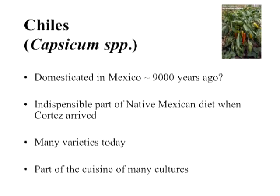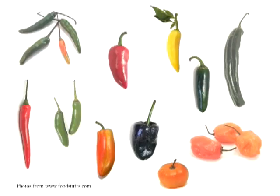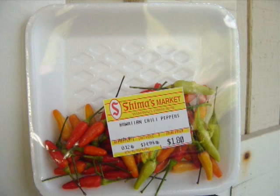Chilis are another great example. Chilis are a major world crop today, domesticated in Mexico about 9,000 years ago. They were an indispensable part of the native Mexican diet when Cortez first arrived, with numerous varieties already selected and consumed with every meal. Although native to Mexico, they've become an absolute integral part of many cultural cuisines including Indian, Indonesian, Korean, and Chinese cuisine. Chili peppers have also been adopted into Hawaiian culture — Hawaiian chili peppers. Interestingly, people often think chili is native to Hawaii because the Hawaiian name, ni'oi, was also the name of a spicy native tree bark, which was then transferred to chili peppers.